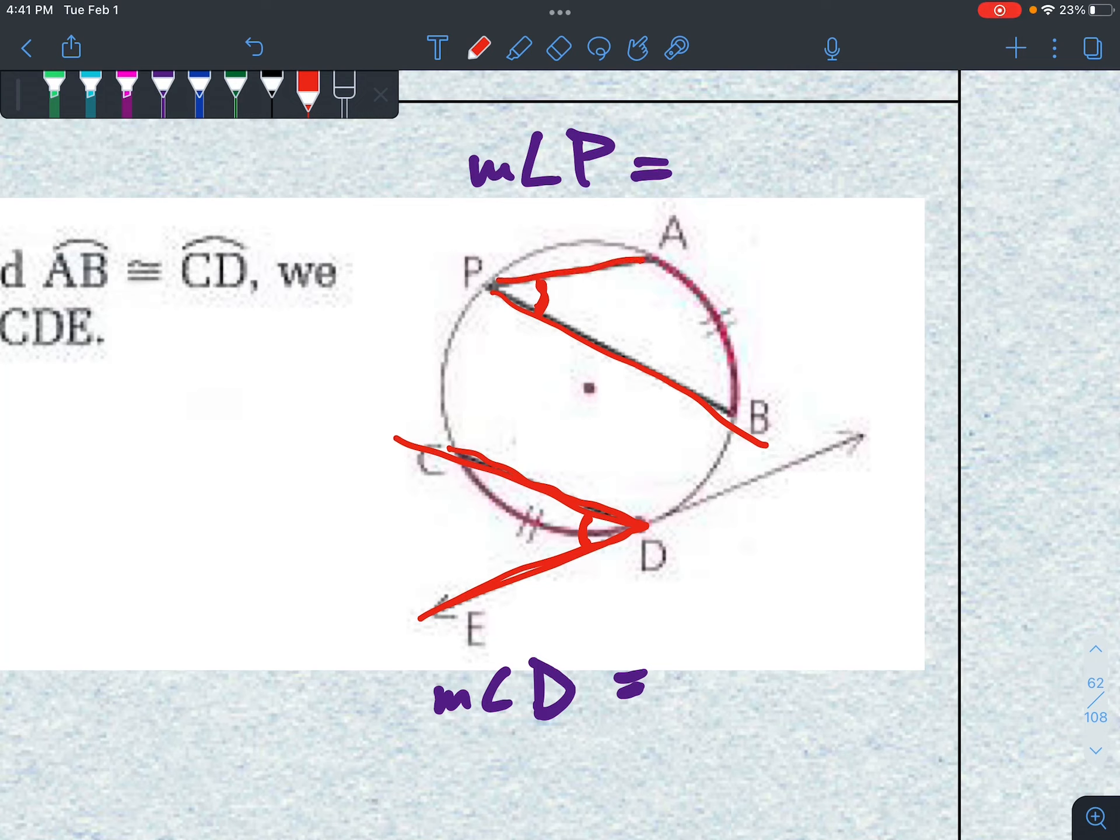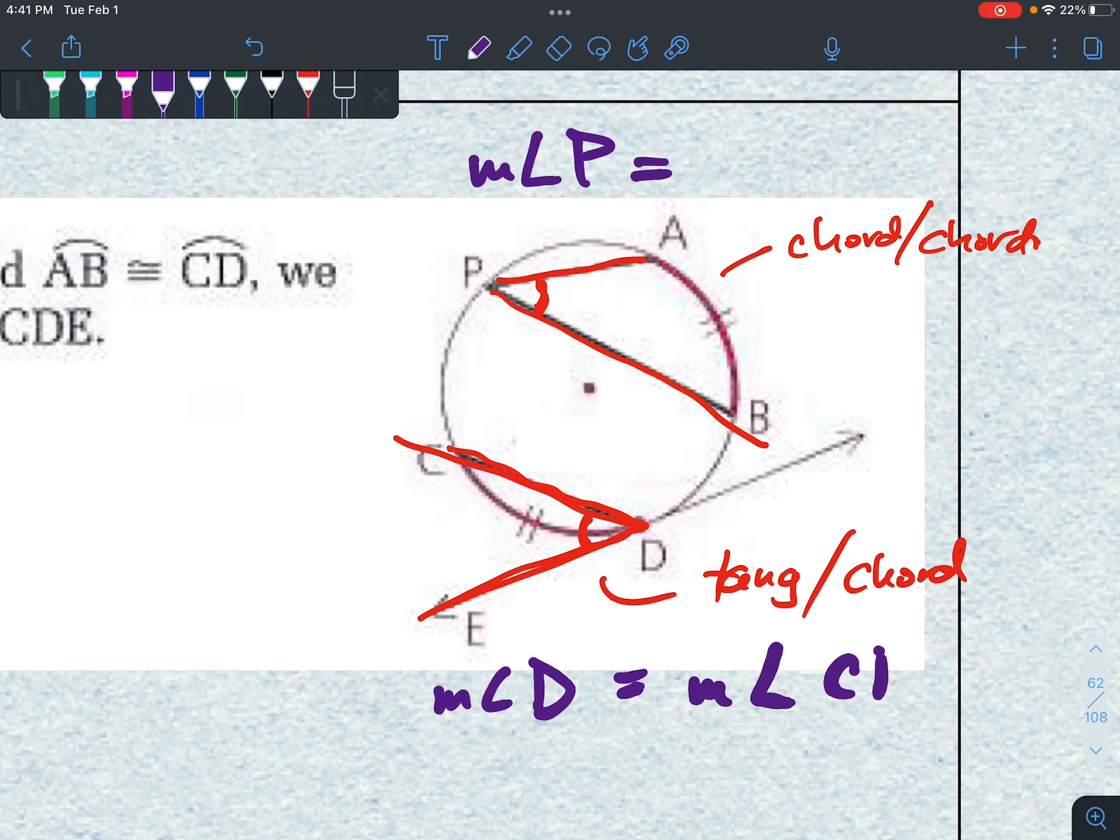Then the angles that intercept them, that angle there and that angle there, those angles have to be the same measurement. What's kind of weird is that this one here is a chord-chord angle, whereas this one here is a tangent-chord. But because they have the same relationship, they're both half, then the measure of angle D has to equal the measure of angle CDE, or measure of angle P.